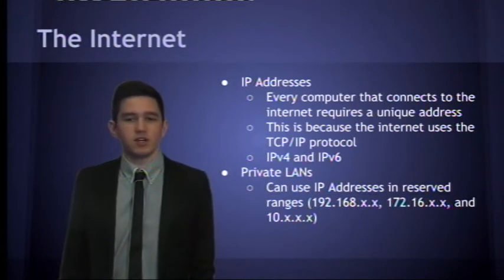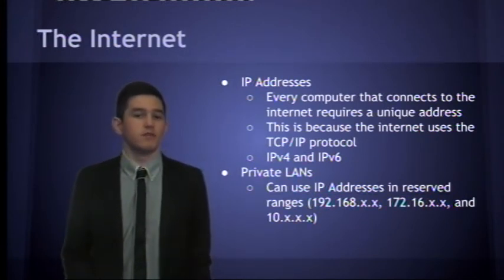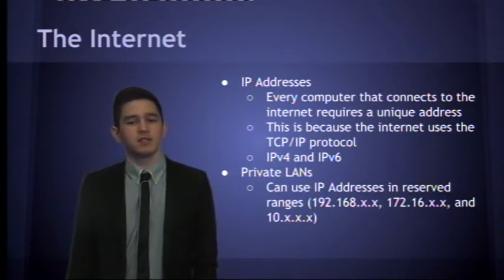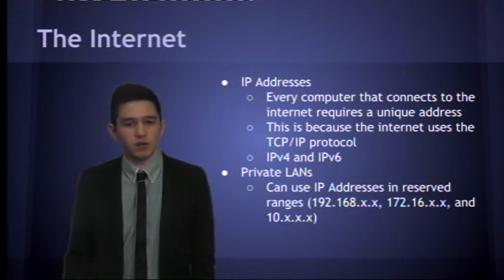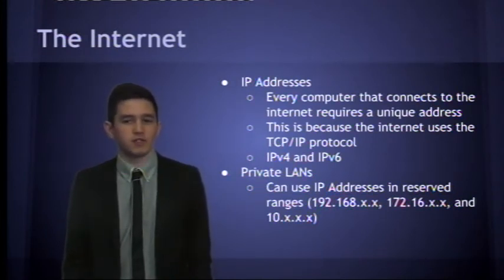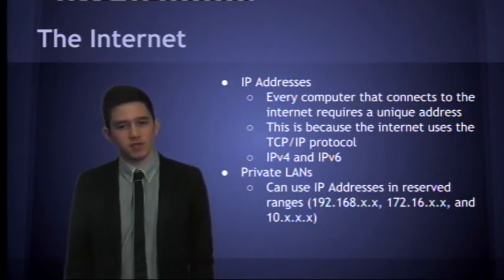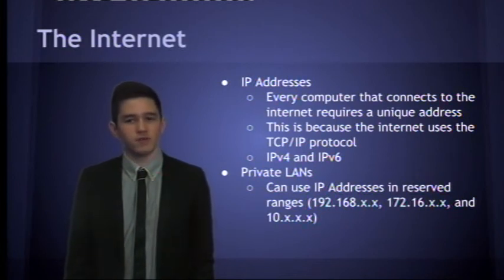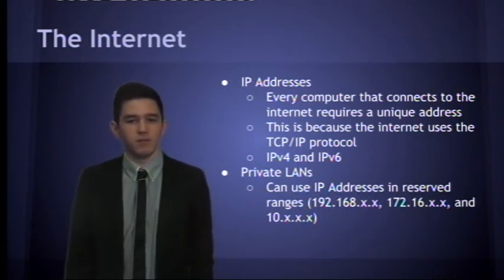You can research the difference between IP version 4 and IP version 6, but essentially IP version 6 is the newer version and we're trying to move towards that. These addresses can be used publicly on the internet, and if you connect to a local network, you can have a private IP address. There are certain ranges reserved for private addresses, such as those starting with 192.168, 172.16, or 10.